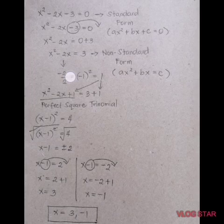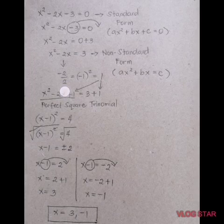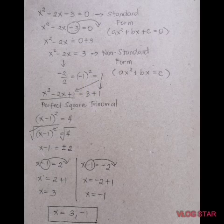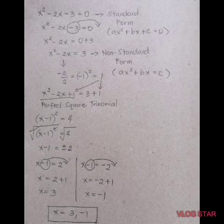After that, take the value of b, which is negative 2, and always divide it by 2. Negative 2 divided by 2 is negative 1. After getting the quotient, you always square it. Negative 1 raised to the power of 2 is positive 1.